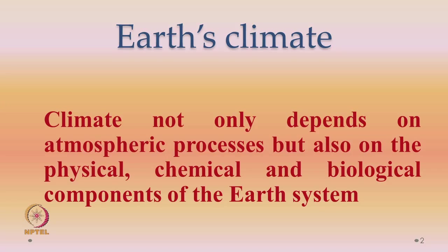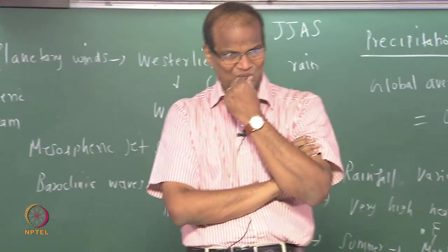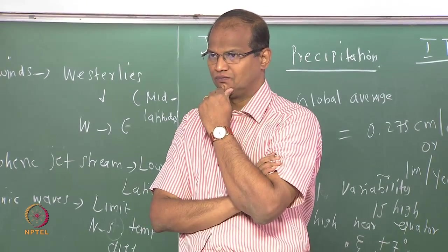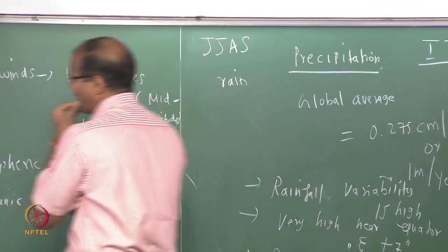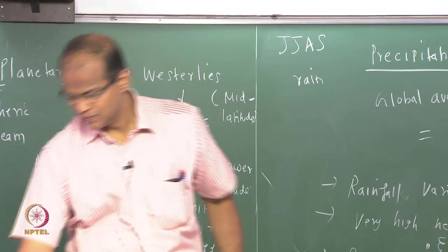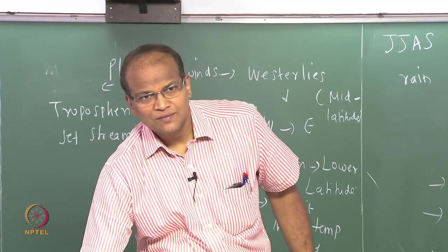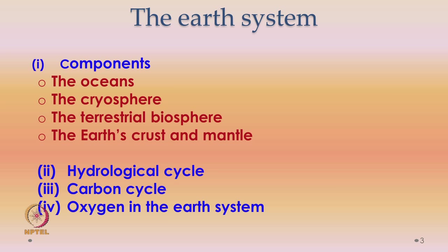This statement needs to be fleshed out. We will see what are these physical, chemical, and biological components. The components of the Earth system are: first, the oceans; second, the cryosphere; third, the terrestrial biosphere; and fourth, the Earth's crust and mantle.